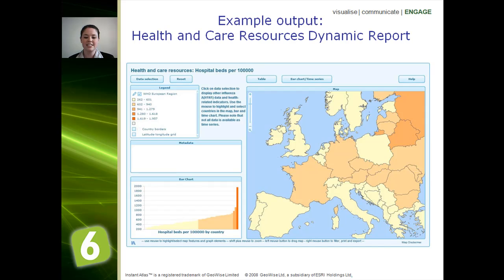Here's an example of one that's in use at the moment. This is the Health and Care Resources dynamic report, and in this example you can see the hospital beds per 100,000 for Europe.